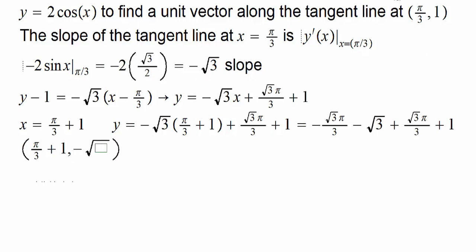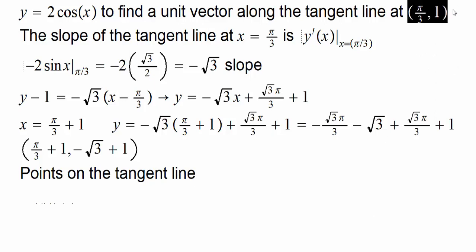Now that we have two points on the tangent line, one of them has coordinates π/3 + 1, -√3 + 1, and the other one has these coordinates (π/3, 1).